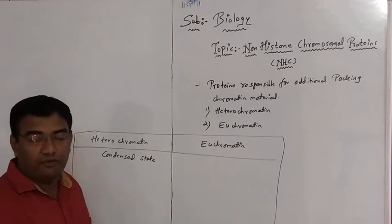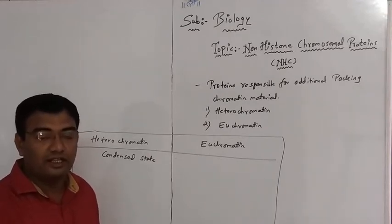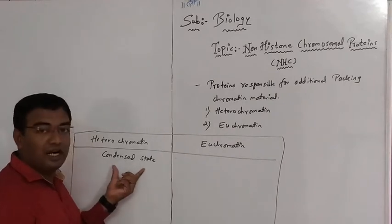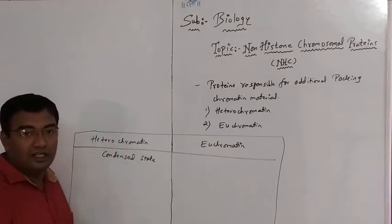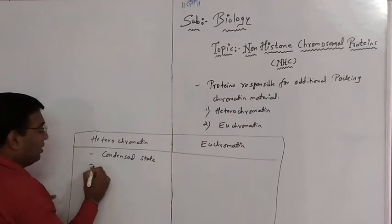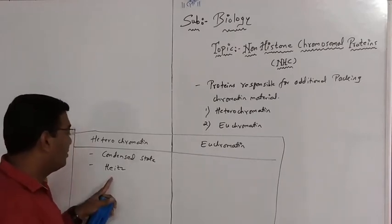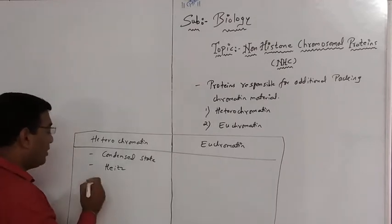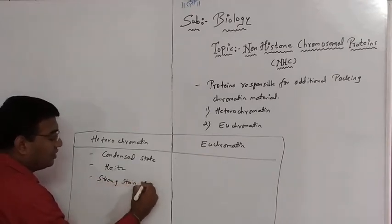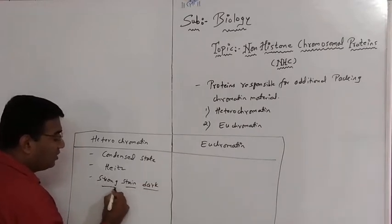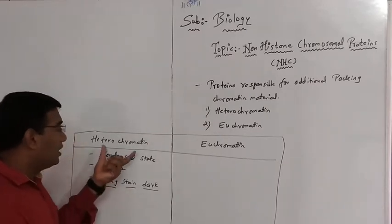Heterochromatin are generally seen in early prophase as well as in interphase stage. As we have seen in meiosis and mitosis, in these stages the chromosomes are in a condensed state — they are heterochromatin. Heterochromatin was first reported by the scientist Heitz — remember this name, as it is asked in exam questions. Heterochromatin have a strong stain and generally appear in dark form, because they are in a condensed state and appear darker when seen under the electron microscope.